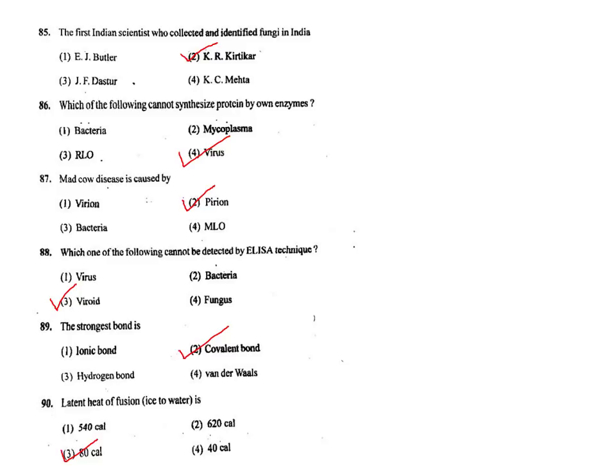Q85. The first Indian scientist who collected and identified fungi in India — the correct answer is K.K. Kirti, option 2.